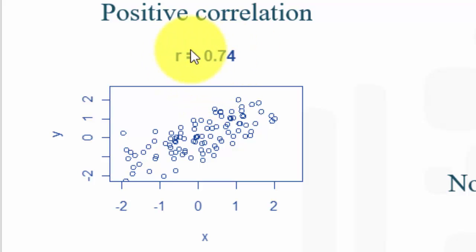To visualize that, if two variables have a positive correlation of 0.74, this is the trend you would see - that is when one increases, so does the other.